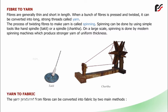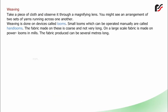The yarn produced from fibers can be converted into fabric by two main methods. Weaving: Take a piece of cloth and observe it through a magnifying lens. You might see an arrangement of two sets of yarns running across one another. Weaving is done on devices called looms. Small looms which can be operated manually are called hand looms. The fabric made on these is coarse and not very long. On a large scale, fabric is made on power looms in mills. The fabric produced can be several meters long.